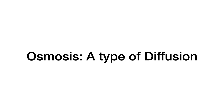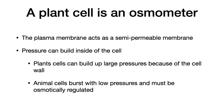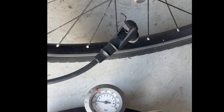Osmosis is the net movement of water across a membrane, either into a cell or out of a cell, and it's a process that is a type of diffusion. What are the requirements for an osmotic system or an osmometer? First, you need two compartments that are separated by a semipermeable membrane. Pressure has to build up in one of those compartments. A plant cell is an osmometer, because it has a plasma membrane which acts as a semipermeable membrane.